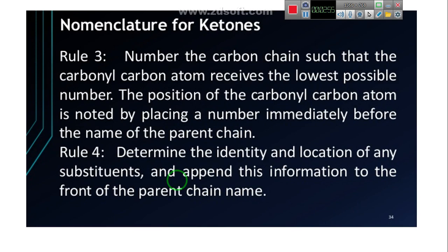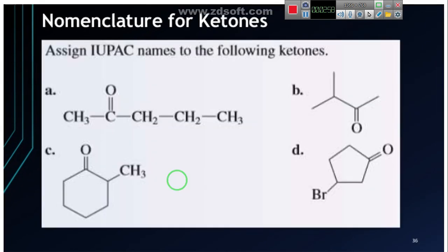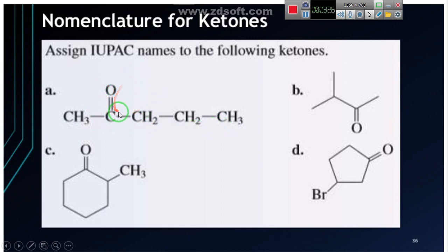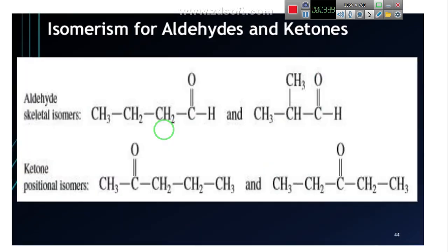For ketones, we use the suffix -ONE. We choose the longest chain and give the lowest possible number to the carbon holding the C=O group. For example, with a chain of one, two, three, four, five carbons, starting from the left gives the C=O at position two, so the compound is 2-pentanone.